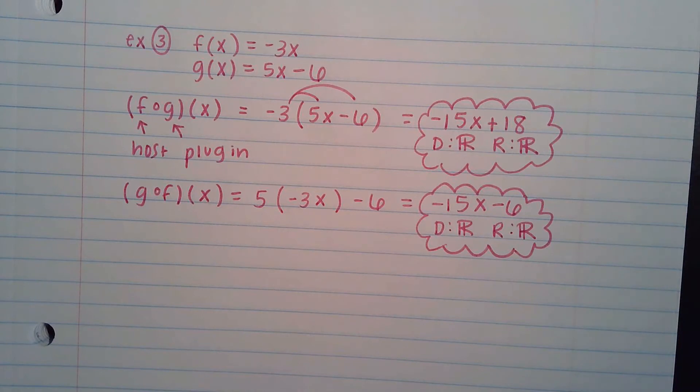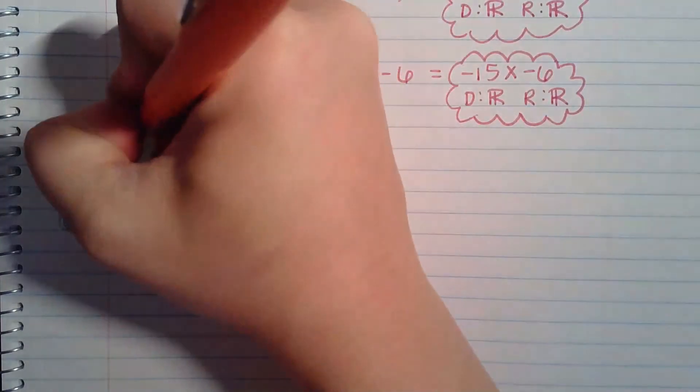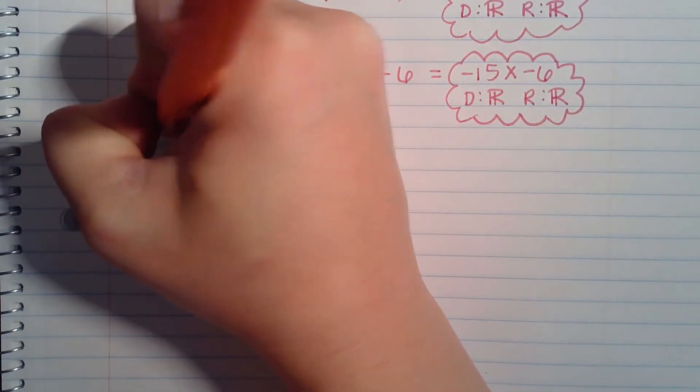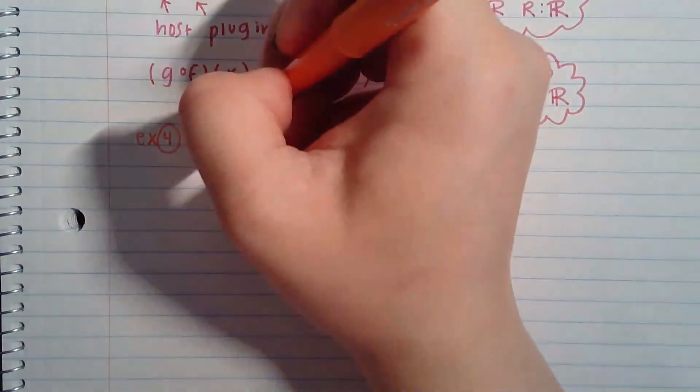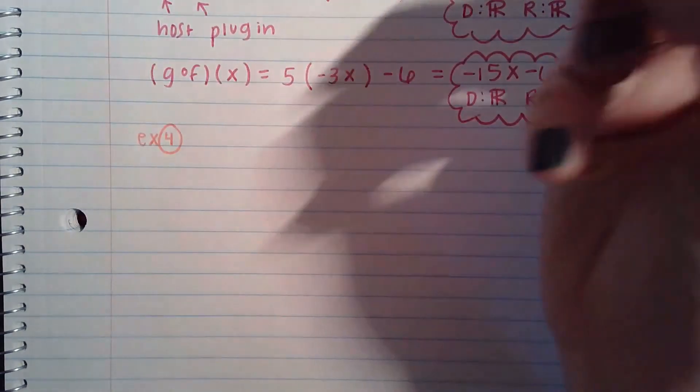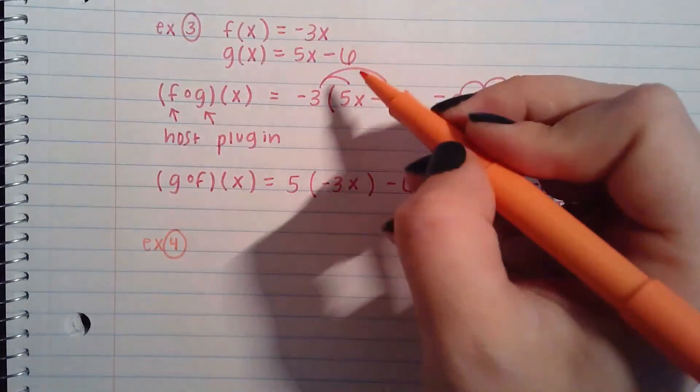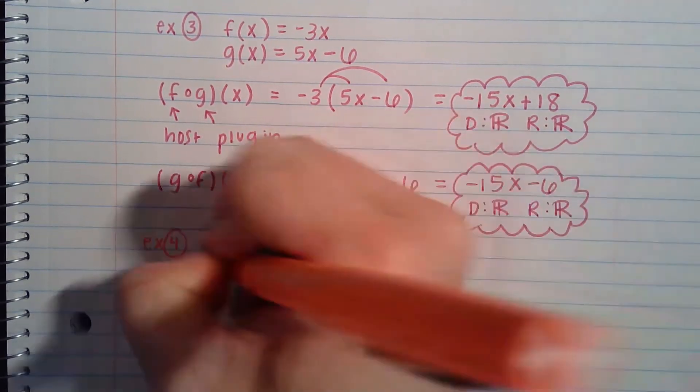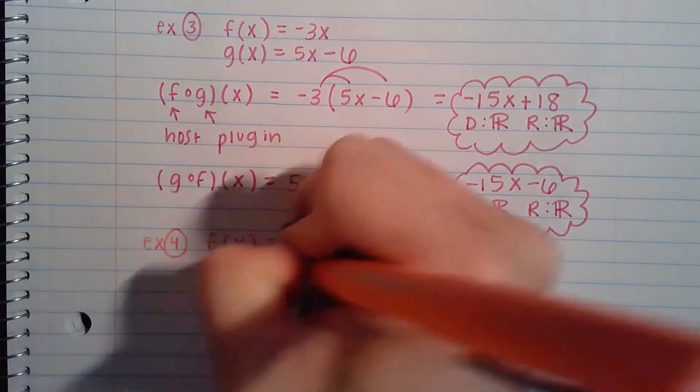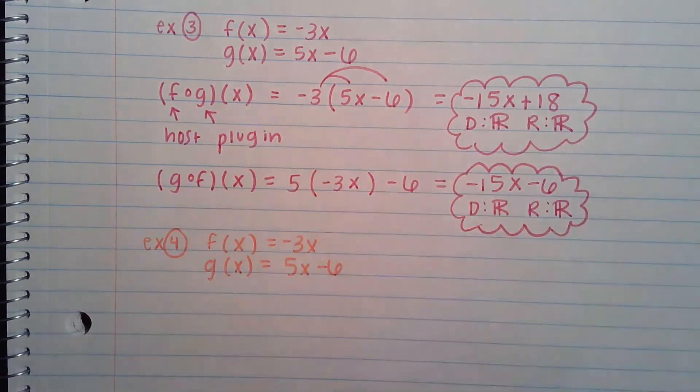All right, we got one last example to do. The last example, we're combining together composition of functions and operations with functions. So these are the types of problems that we would do that would have us actually kind of solve something out. And at the end, there would usually just be one number or like an equation. So for example, let's actually stick with these last two equations. So let's stick with f(x) equals negative 3x and g(x) equals 5x minus 6, just to keep things simple.